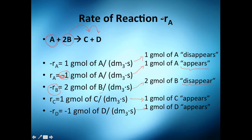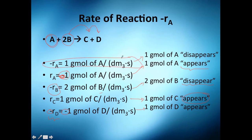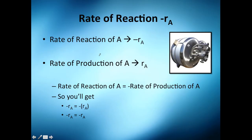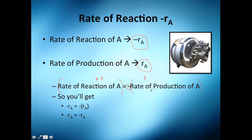The rate of production of C is positive — one gram mole is appearing, which makes sense. The rate of reaction of D is also negative, meaning D is appearing as a product. The key relationship is: the rate of reaction of A is minus R_A, and the rate of production of A is R_A — the same number but with opposite sign.